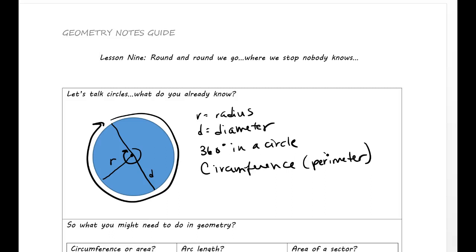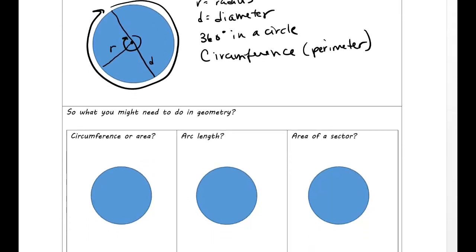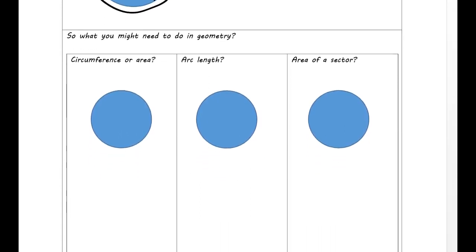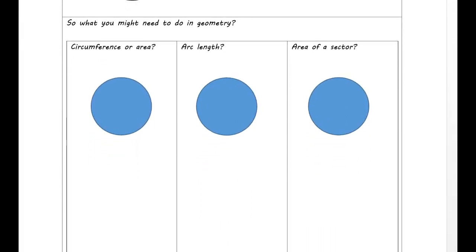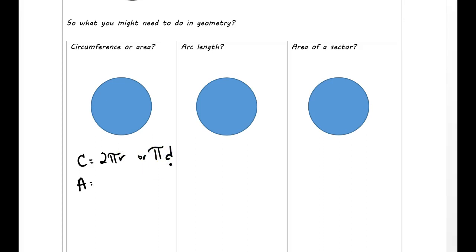Maybe you remember arc length — I actually have a box allocated below for arc length. When you get to geometry, you're going to do more than just circumference or area. Just as a refresher, the formulas: circumference is 2πr, or sometimes written as πd, so pi times diameter. And then area, you probably remember, is πr².